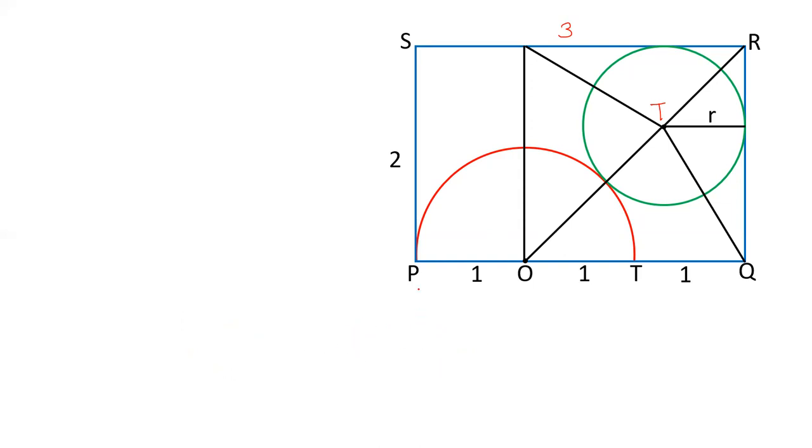Let us try to find out the length of various sides. This particular side is 2 and this is R, the radius of the circle. So this is 2 minus R. This is R. This OQ is 2, 1 plus 1 is 2. So this length is 2 minus R. This point is P.